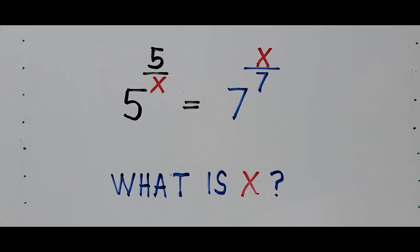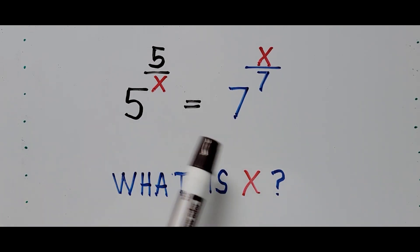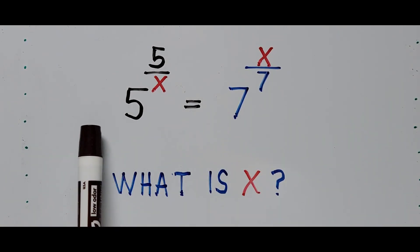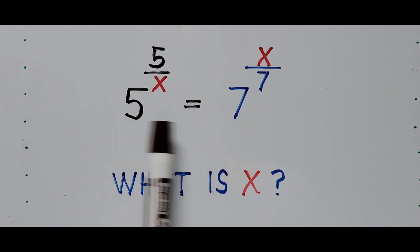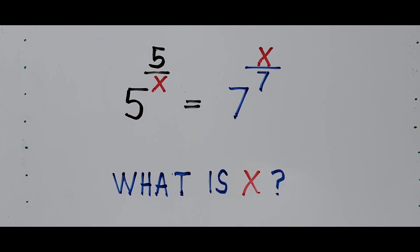So now let's start solving. If we take a look at the equation, the bases are different — 5 on one side and 7 on the other — and additionally we cannot have a common base for both. So in this case we'll be solving the equation by using the logarithm.